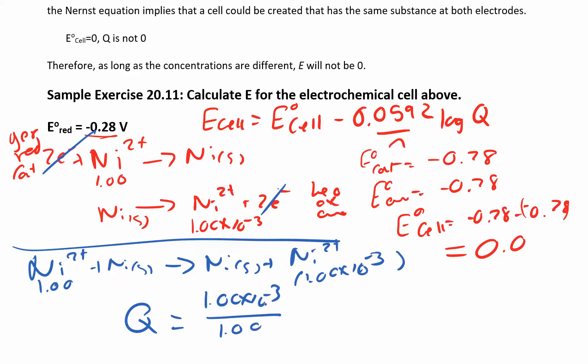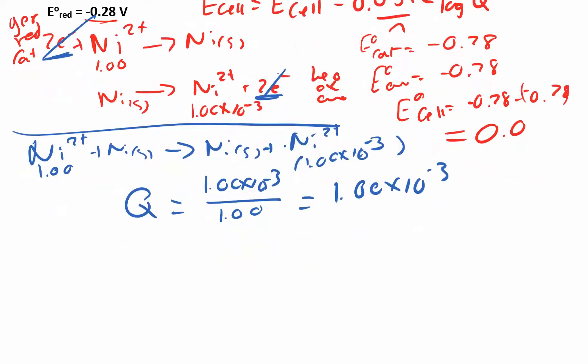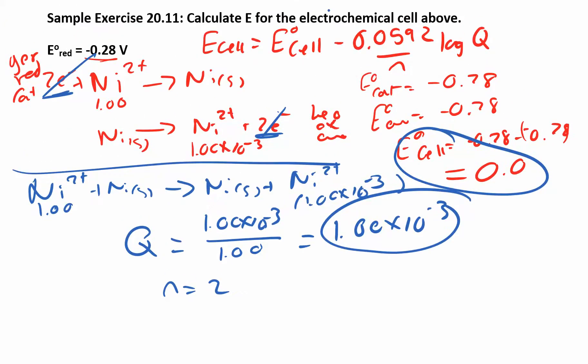So it's the dilute solution over the concentrated solution. That's how you'll get the reaction to progress in the forward direction, dilute over concentrated. So this just becomes 1 times 10 to the negative 3. The number of electrons being transferred, right, n is 2, and our Ecell is 0. So here's our Ecell. This is our Q, and we said n equals 2. So now we can plug all that into this equation up here.